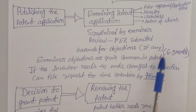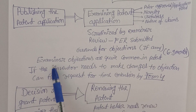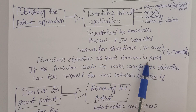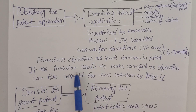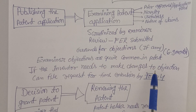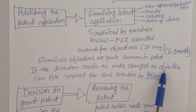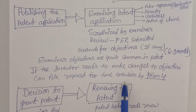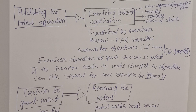The FER is submitted within a six to nine month timeframe. Examiner objections are quite common in patent applications. If it involves some special kinds of information, the public can also raise objections. If the inventor needs to make changes in response to objections, they can file a request for time extension by filling Form number 4.